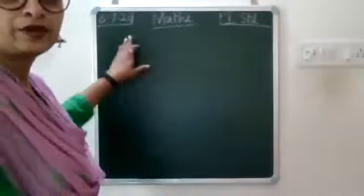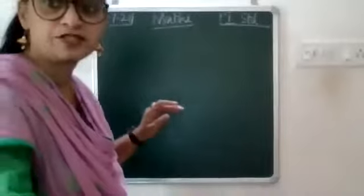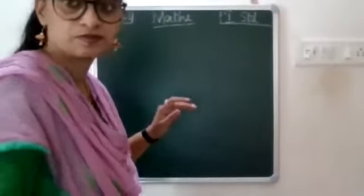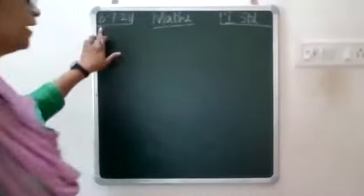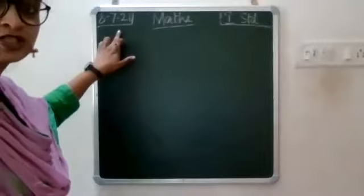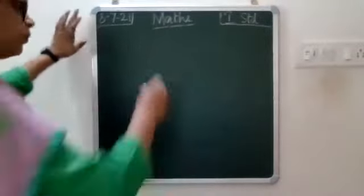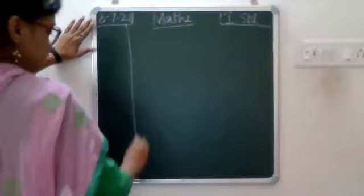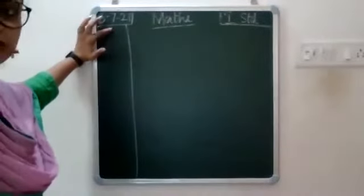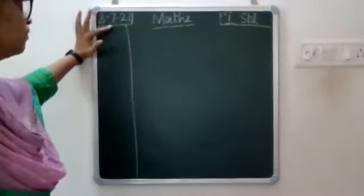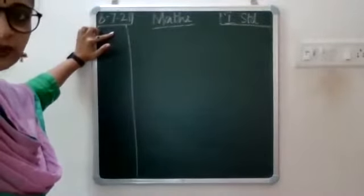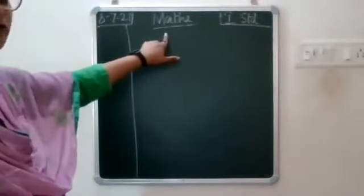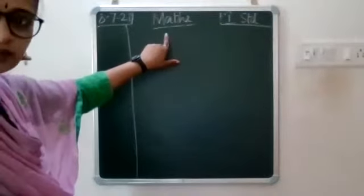Okay, write today's date in the margin. Write 8-7-21 in the margin on this side, in the first line.